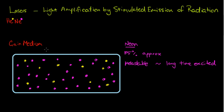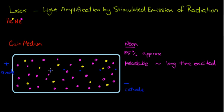So this is our gain medium or laser cavity, and we actually put a potential difference across it. This is our negative cathode and this is our anode. This is a high potential difference — electrons are liberated and accelerated across towards the anode.